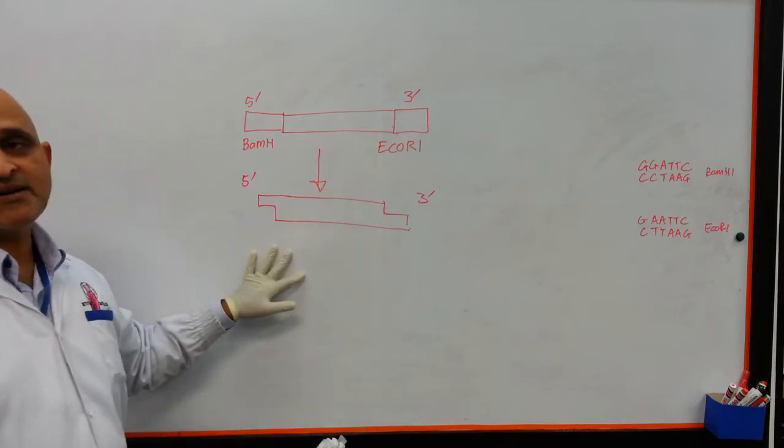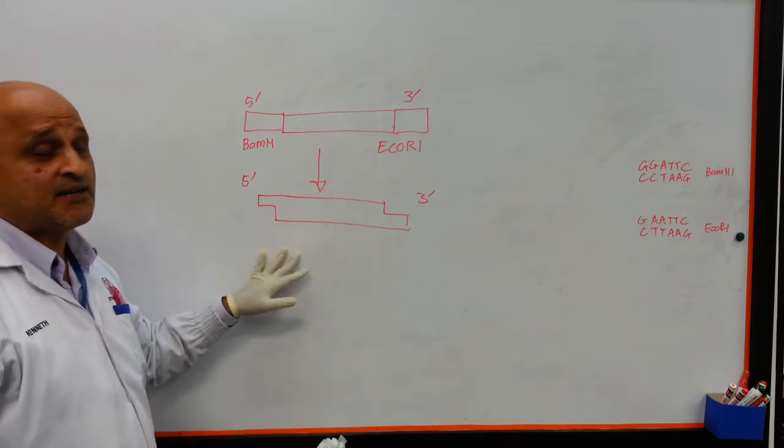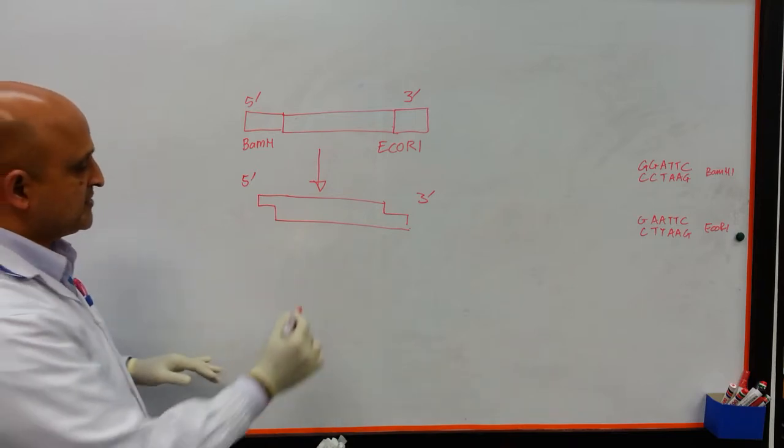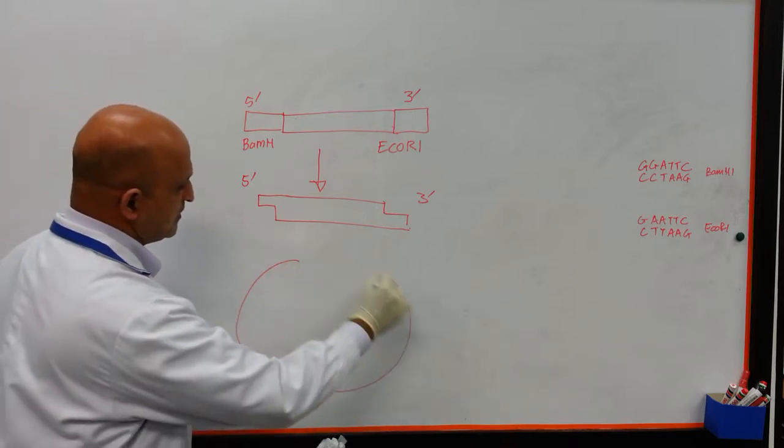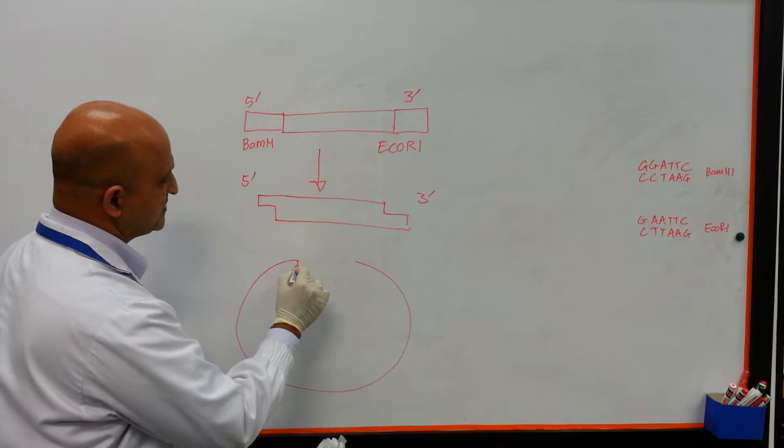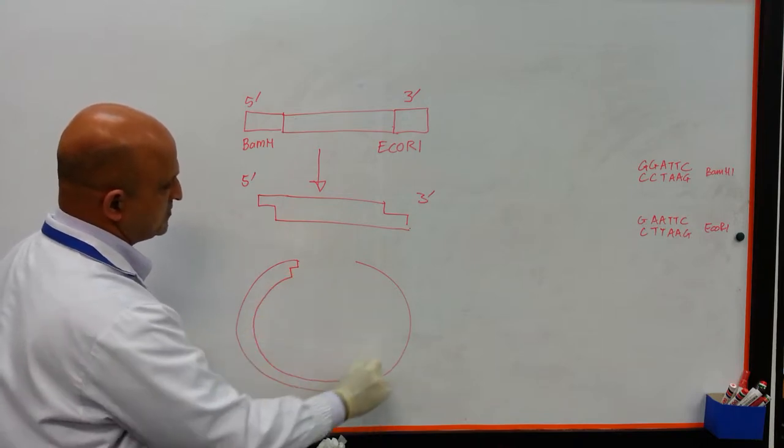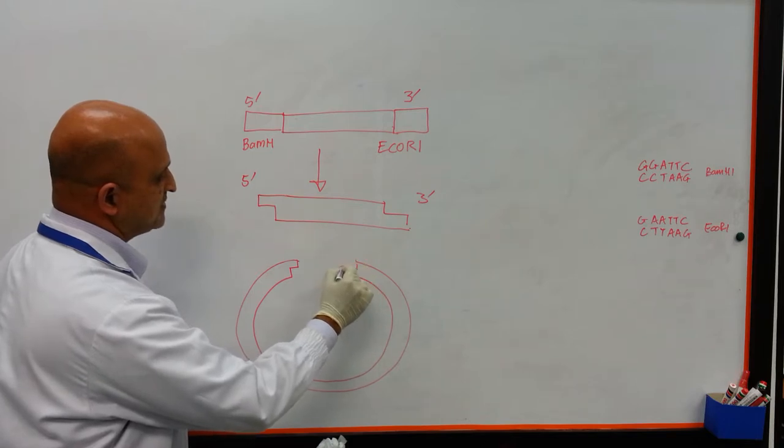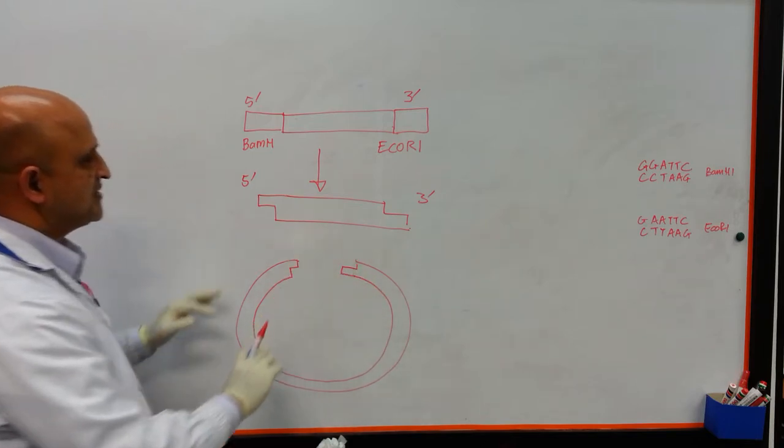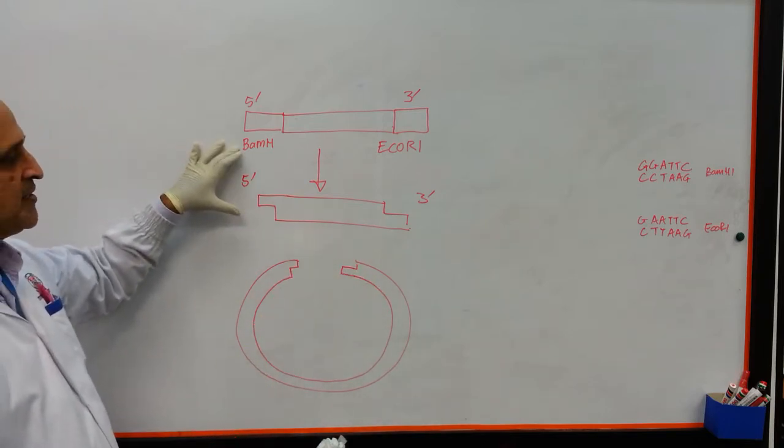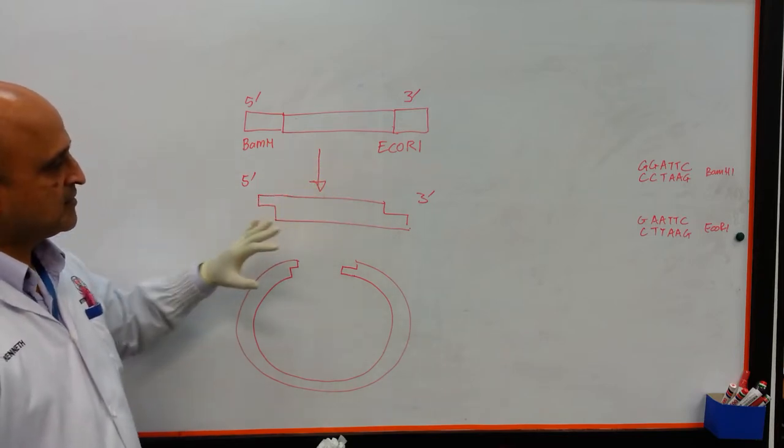This fragment can then be inserted into the plasmid vector which has been digested with the similar set of enzymes. So, we have a plasmid vector which has been digested with the enzyme BAMH1 and ECO-R1.